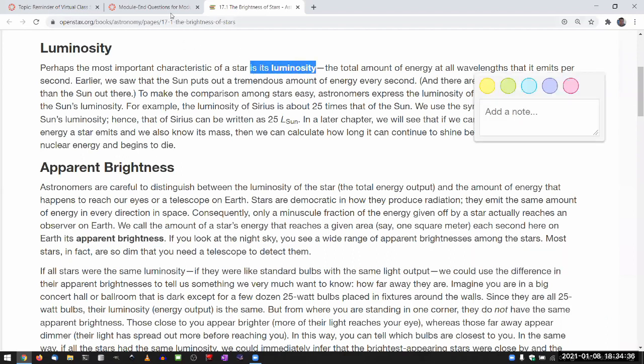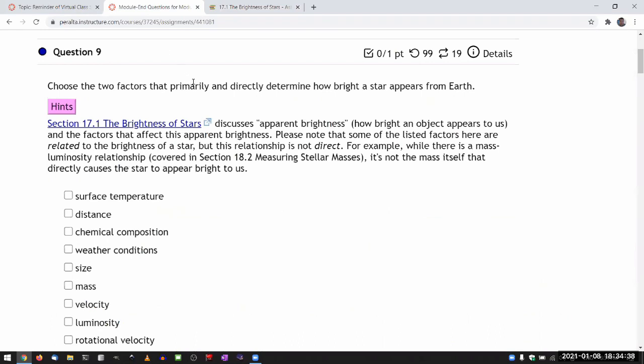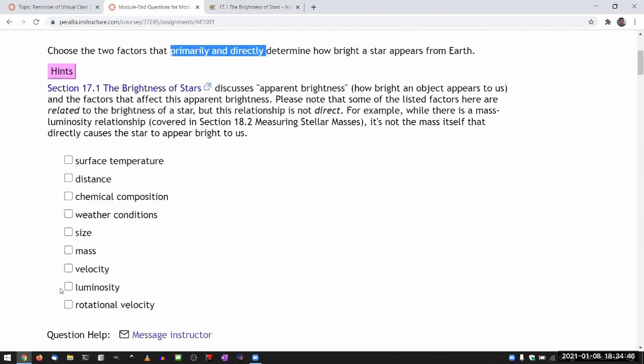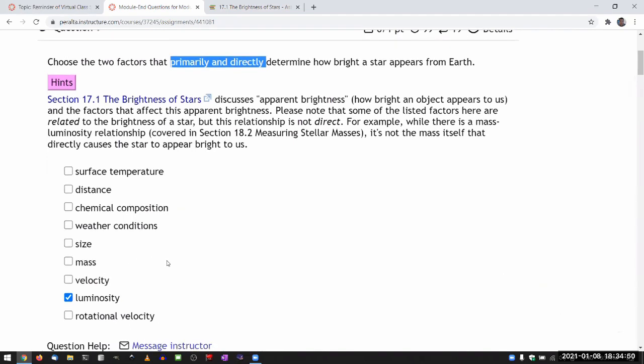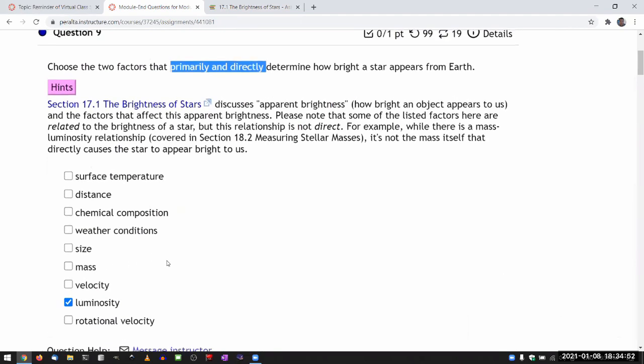So with that in mind, what primarily and directly determines how bright a star appears is one, luminosity. If the luminosity is less, then it wouldn't appear as bright. And as I was emphasizing, distance is another important direct factor.